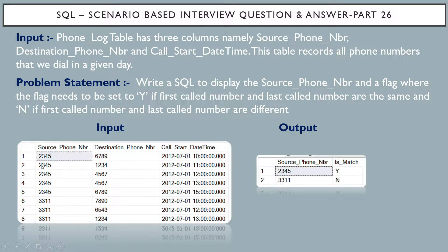The call start date time column captures the date as well as the time at which the call has been made. For source phone number 2345, calls were made at 10, 11, 12, 13, and 15 o'clock. Similarly, for source phone number 3311, we have three entries with calls made at 10, 12, and 13 o'clock on 1st July 2012.